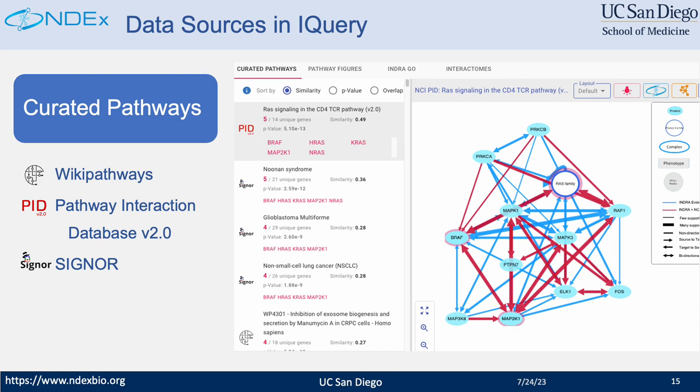Last year, we released the 2.0 version of PID. This new version augmented the original by adding new edges assembled from the INDRA database. INDRA is a database project led by our collaborator Ben Gorey at Harvard. INDRA stands for Integrated Network and Dynamical Reasoning Assembler — it is an automated model assembly system. CNUR is a data source about causal interactions between proteins and other entities, and INDRA has 90 networks from this data source.